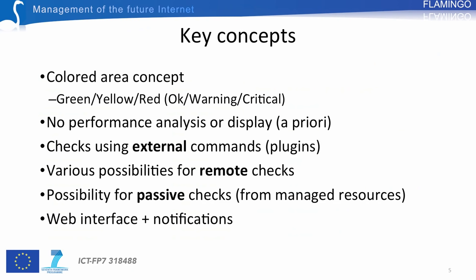Nagios is based on several key concepts. The main concept is the concept of colored area. The status of a service is characterized by a color: green means the service is OK, yellow means the service is in a warning state, and red means the service is in a critical state. The semantic of OK, warning, and critical is defined by the administrator and will vary depending on the deployment scenarios.